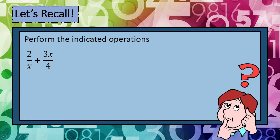Let's try example number one. Suppose we're going to add 2 over x plus 3x over 4. Our first step is to find the LCM of the denominator, also called the least common denominator or LCD. Our LCD here is equal to 4x. Next step is to write each expression using the LCD.